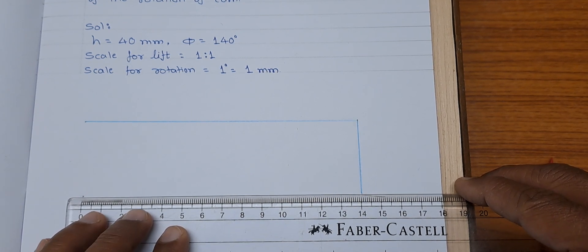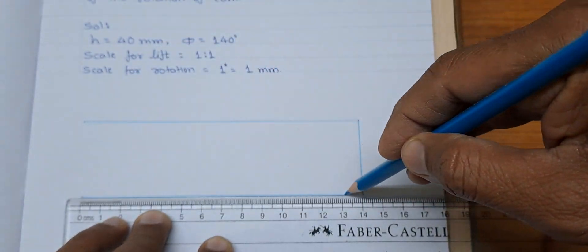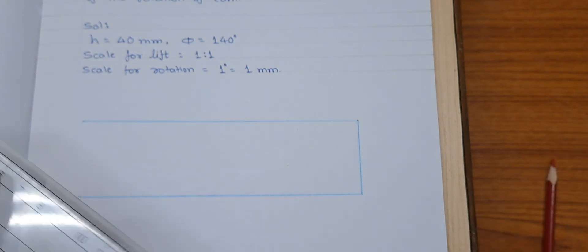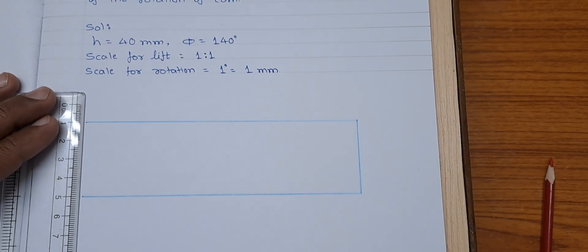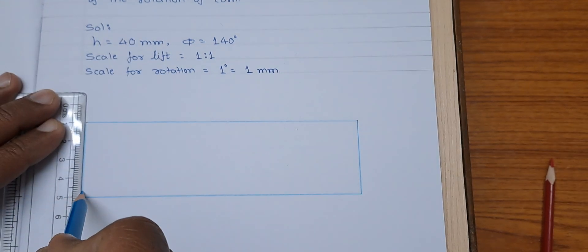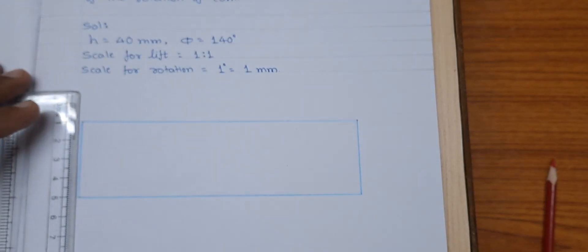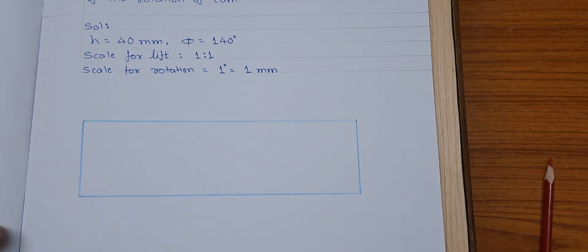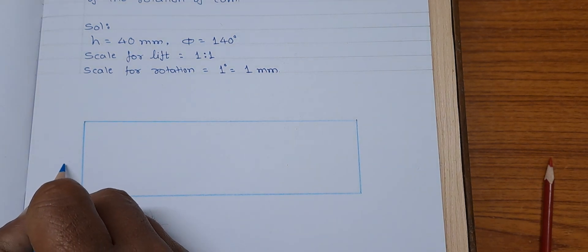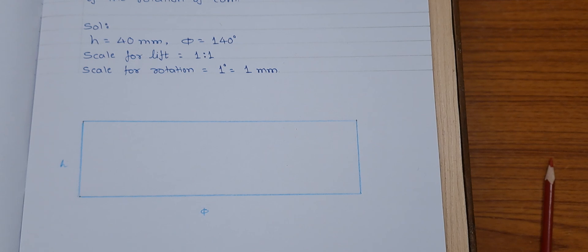This indicates the lift and this indicates the angle of rotation. Now here the displacement is at constant velocity so the profile of the curve will be very simple.